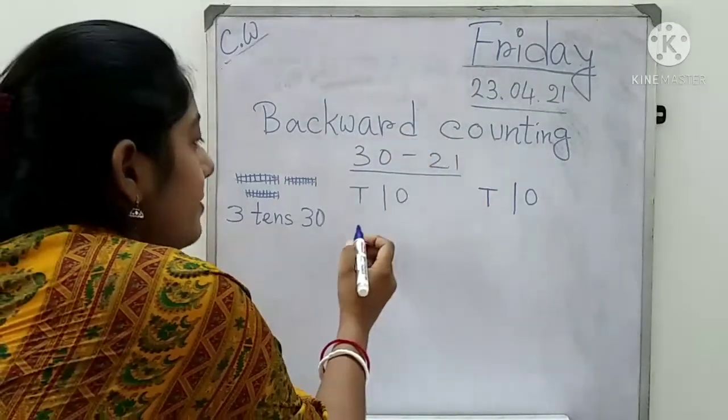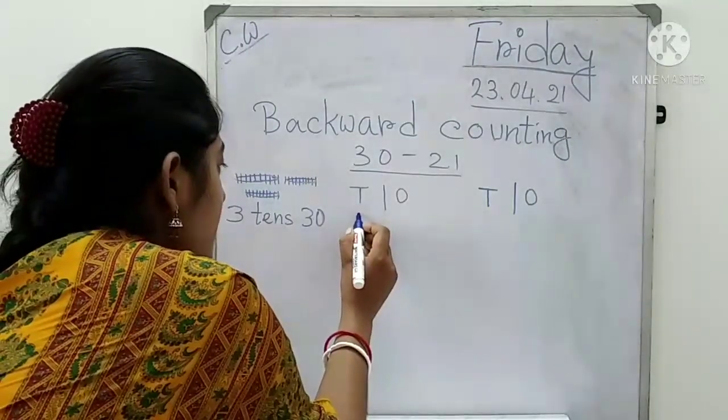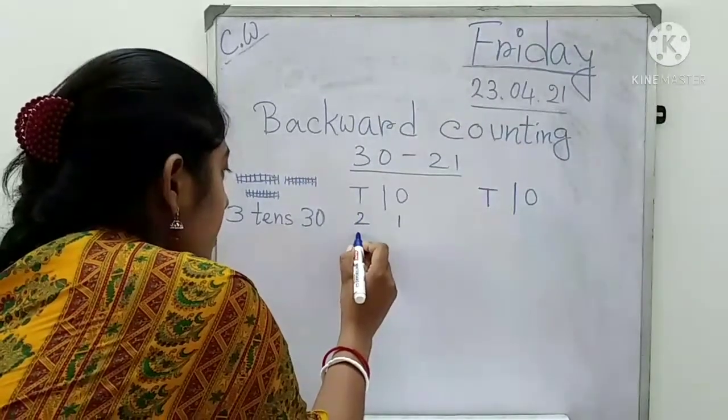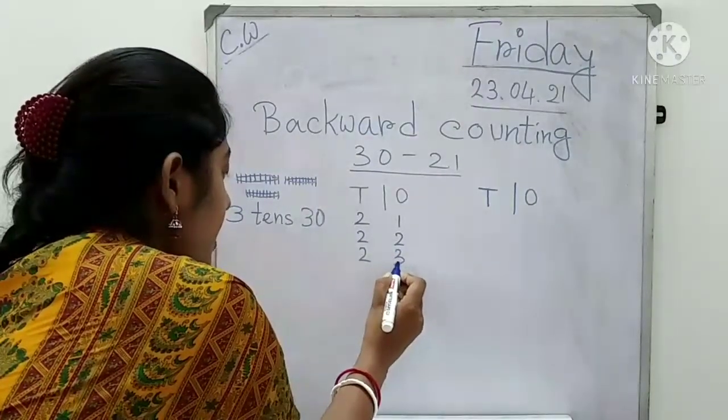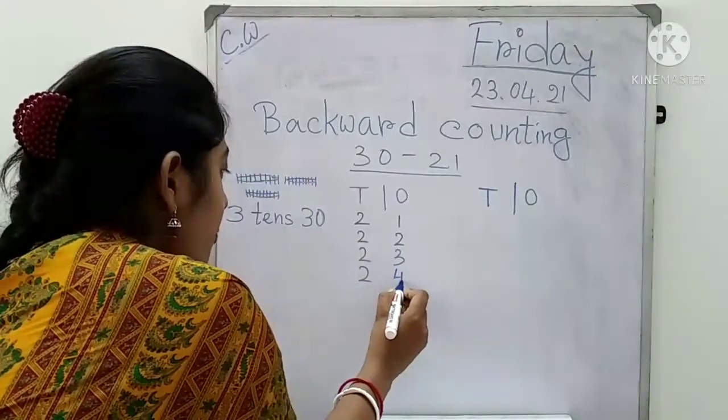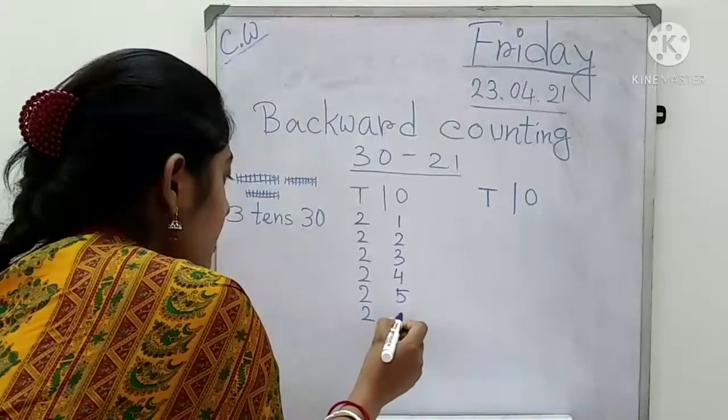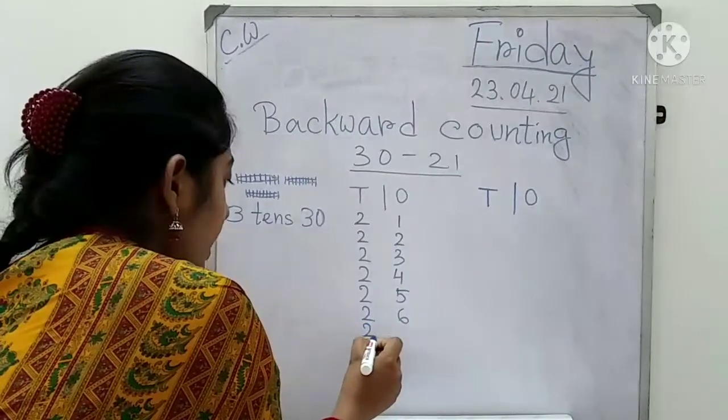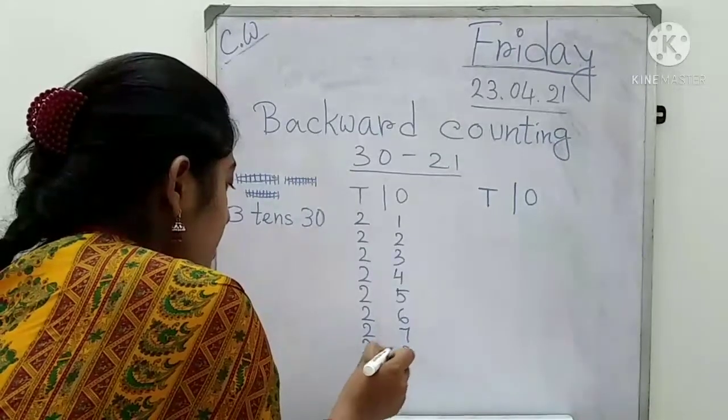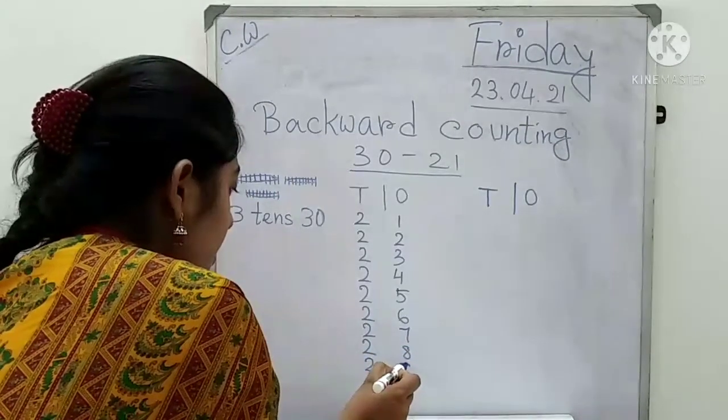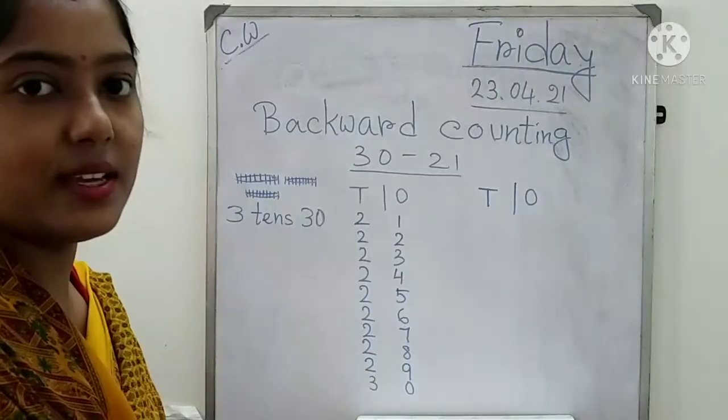So this side, left side, first I am revising the numbers from 21. Say the first number is 21, then 22, 23, 24, 25, 26, 27, 28, 29, 30.